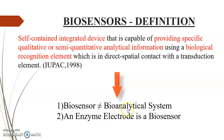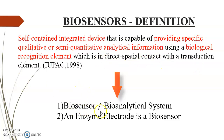So what are biosensors? The IUPAC gave a definition for biosensors in 1998: it is a self-contained integrated device that is capable of providing specific qualitative or semi-quantitative analytical information using a biological recognition element which is in direct spatial contact with the transduction element. So biosensors are not bioanalytical systems, but they will be able to analyze quantitatively or qualitatively the bioelement. For example, an enzyme electrode is a biosensor.